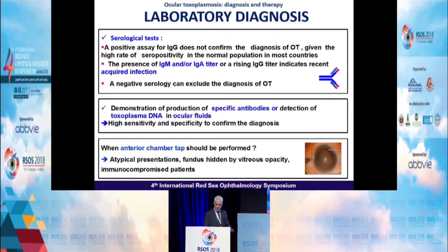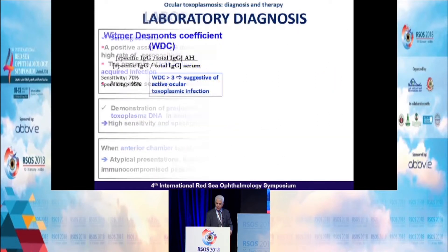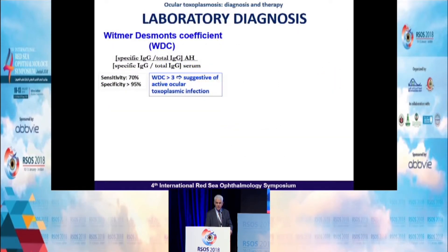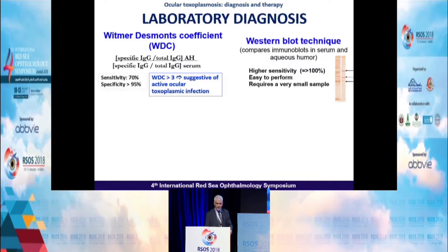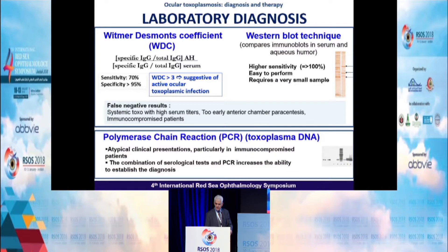Anterior chamber tap should not be performed in typical presentation, but is indicated in atypical presentation, in patients with fundus hidden by vitreous opacity, and in immune-compromised patients. The diagnosis can be confirmed by the Witmer-Desmond coefficient or by Western Blot technique. PCR is also useful, particularly in atypical presentation and in immune-compromised patients. In some cases, both the Witmer-Desmond coefficient and PCR can be combined to confirm the diagnosis.